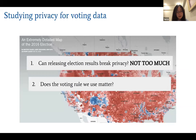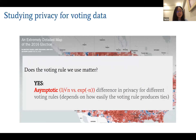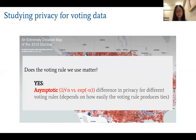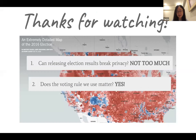Second, does the voting rule matter? Yes — there is an asymptotic difference in privacy between different voting rules. This difference is between O(1/√n) — the case when outputting the full histogram — and exponentially small in the number of votes. Intuitively, this difference depends on how easily the voting rule produces ties. Voting rules that produce ties more easily have worse privacy.